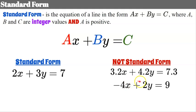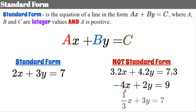Negative 4x plus 2y equals 9 is not in standard form because a is negative. Similarly, one-third x plus 3y equals 7 is not in standard form because the a value is not an integer — it's a rational value.